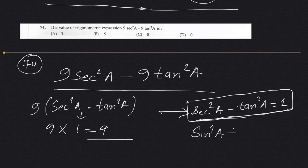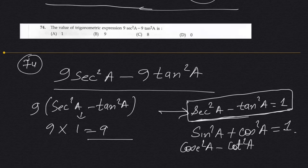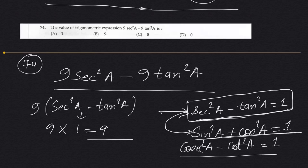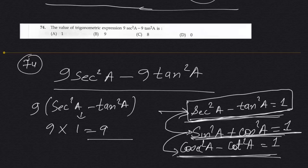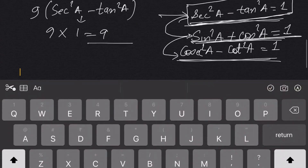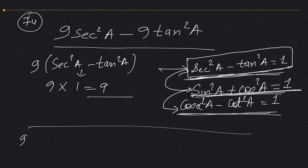The key identity is: sin²θ + cos²θ = 1, and correspondingly sec²a − tan²a = 1. Knowing this will help you a lot. For those who don't know trigonometry, look up these identities in your class 9 or 10 textbook. So the answer is 9.